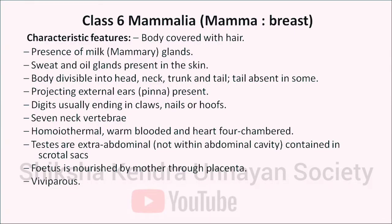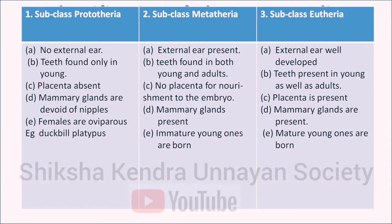The next class is Mammalia — mammal means breast. Body is covered with hair and mammary glands provide milk to offspring. Sweat and oil glands are present in the skin. Body is divisible into head, neck, trunk and tail (tail absent in some). Projecting external ears (pinna) are present. Digits usually ending in claws, nails and hooves. Dentition is thecodont (teeth in sockets of jaw bones) and generally heterodont (four different types of teeth). They have seven neck vertebrae, are homeothermal and warm-blooded, and the heart is four-chambered. Testes are extra-abdominal in scrotal sacs. They are viviparous (give birth to young); some primitive mammals are oviparous. Fetus is nourished through placenta. Mammalia is further divided into three subclasses: Prototheria, Metatheria and Eutheria.